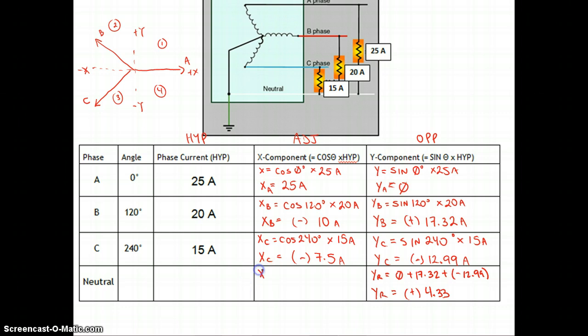The x component for the resultant here looks like it's positive 25 amps plus negative 10 plus negative 7.5. Okay, so we got 25 minus 10 minus 7.5 gives us 7.5. So we're left with positive 7.5.